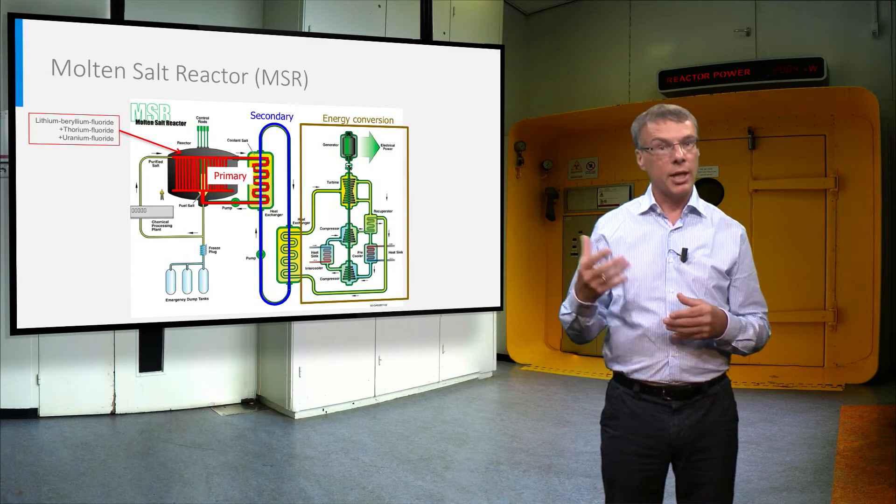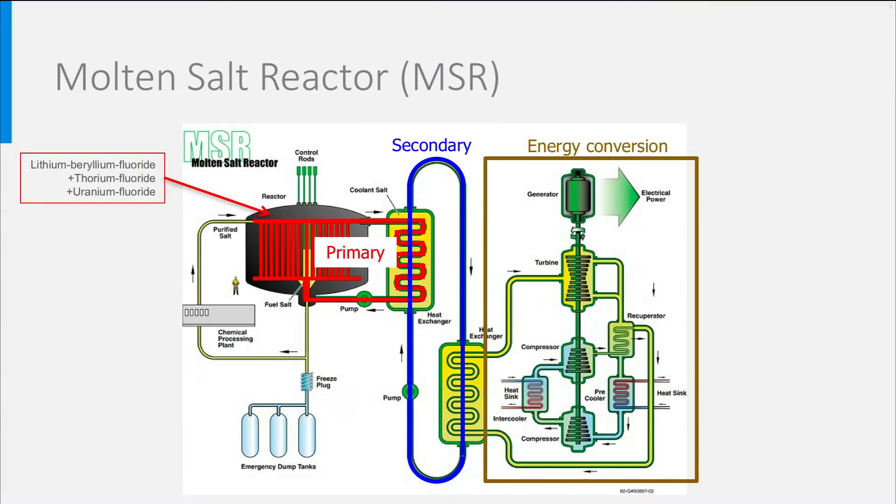In the intermediate loop, indicated in blue, the heat is transferred to the energy conversion system to produce electricity or process heat. A small part of the salt is continuously tapped from the primary circuit to extract the fission products from the salt and to add fresh thorium.